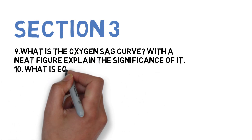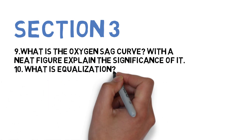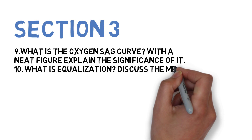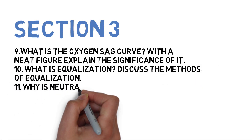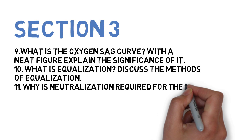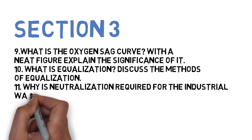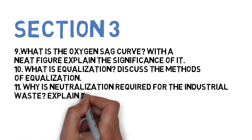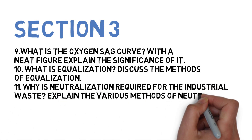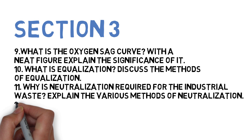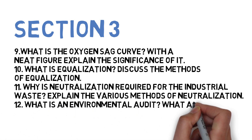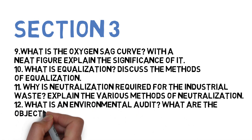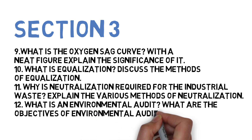Next is what is equalization — discuss the methods for equalization. Next is what is neutralization required in industrial waste treatment and explain various methods of neutralization. The next question is what is an environmental audit and give the objectives of environmental audit. These four questions you have to do for Section 3.